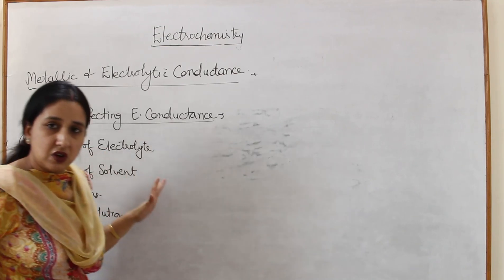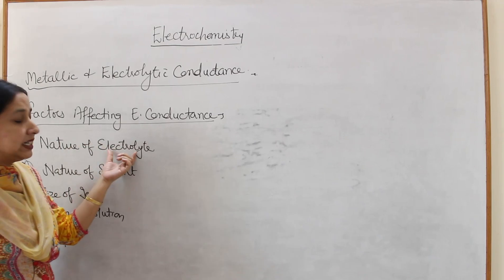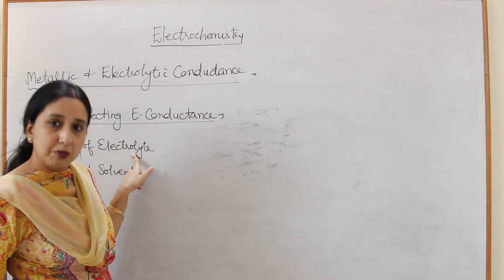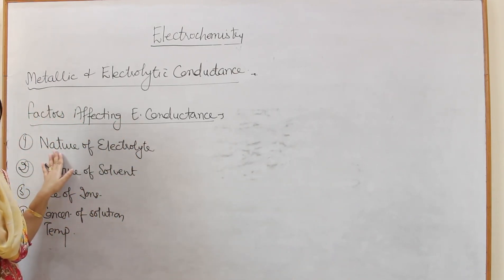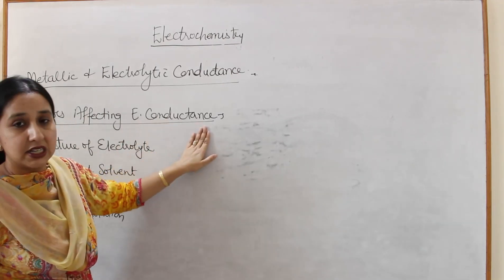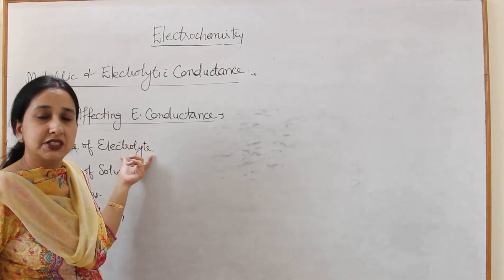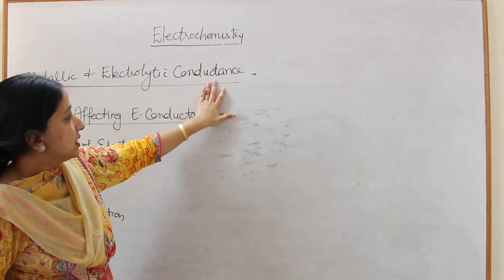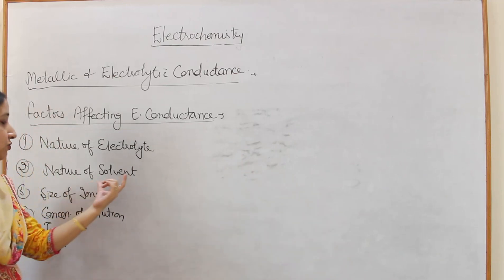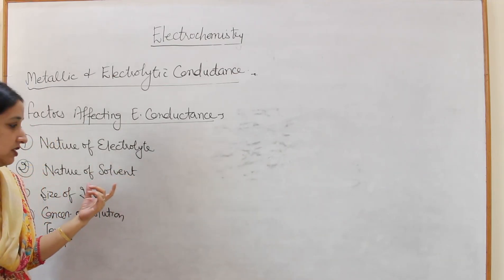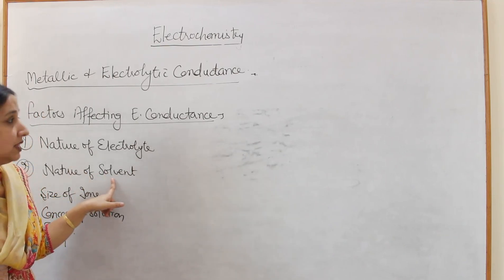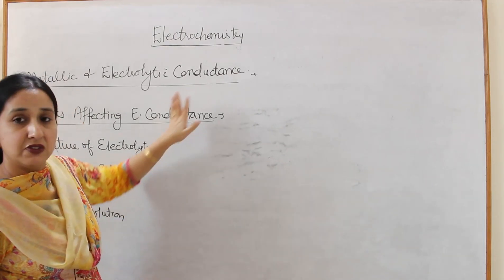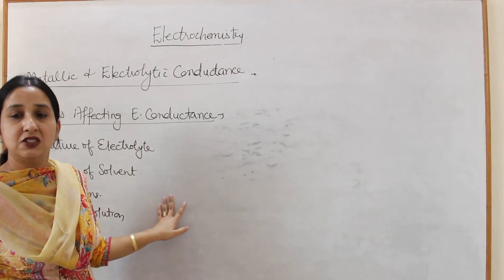First, nature of electrolyte: whether it is strong or weak. If the electrolyte is strong it will be completely dissociated, so the number of ions will be more and electrolytic conductance will be high. If it is weak, conductance will be low. Second, nature of solvent: if the solvent is polar, conductance will be more; if the solvent is non-polar, conductance will be low.